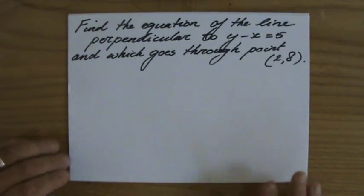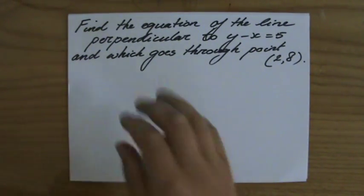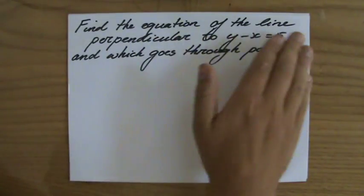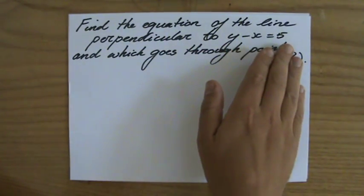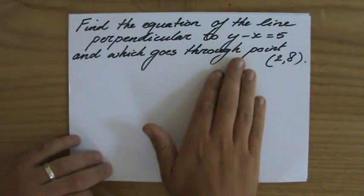Good afternoon and welcome back. They're asking me to find the equation of the line perpendicular to y minus x equals 5 and which goes through point (2,8).